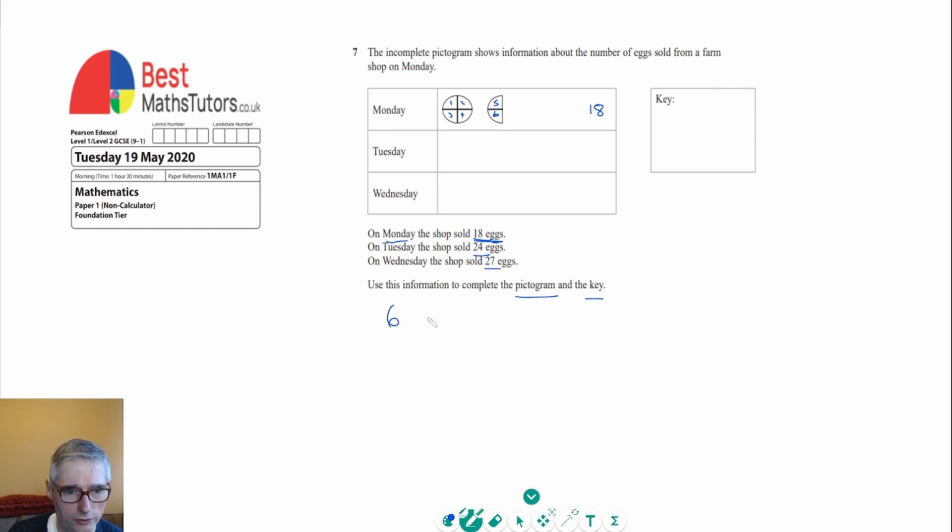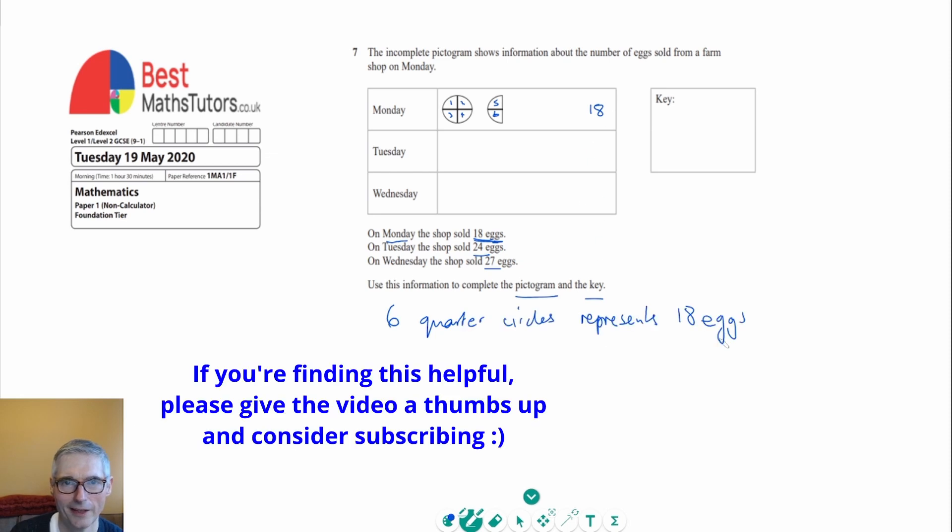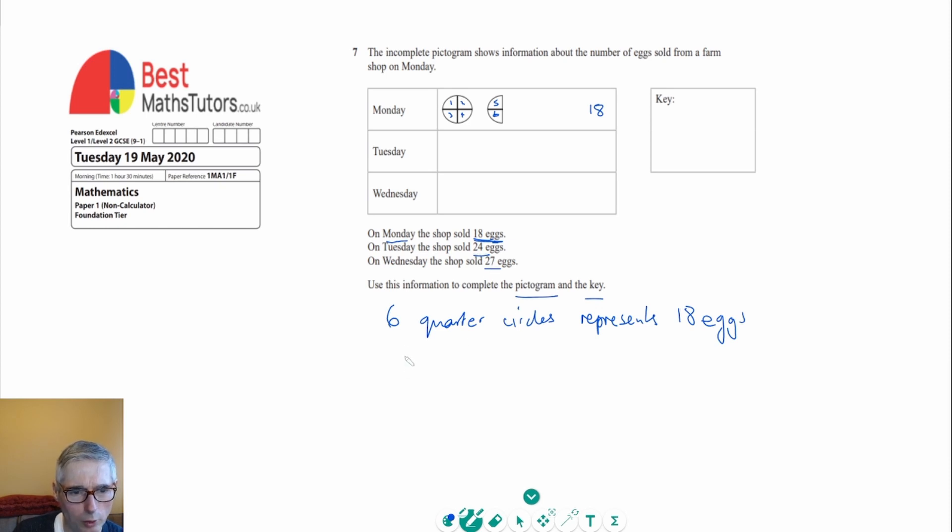So we can see that six quarter circles represents 18, 18 eggs that is. And so from that we need to say what would one quarter circle represent? Well we can see that one quarter is actually going to equal 18 divided by 6. If we work that out, 18 divided by 6 is 3. So one of these quarters in these circles represents three eggs.